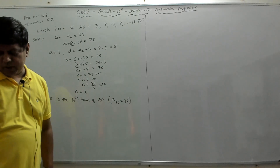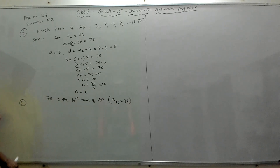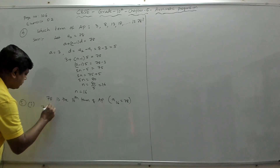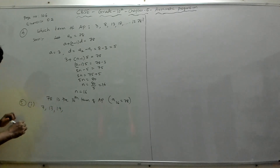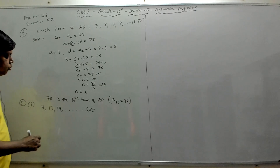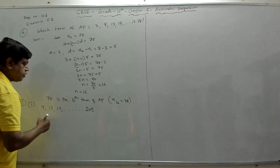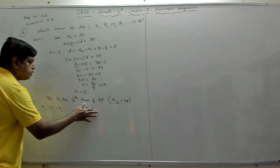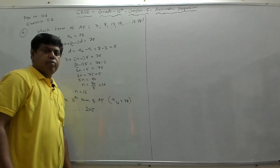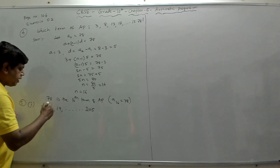Problem 5 says: find the number of terms in each of the following APs. The first AP is 7, 13, 19, and so on till 205. We have to find how many terms are there in this AP.